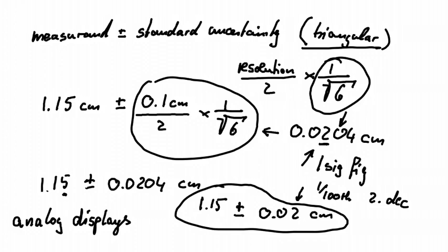So analog displays follow a triangular distribution with one over square root 6. Whereas a digital display, where we have no idea where our measurement could lie, would usually follow a uniform distribution.